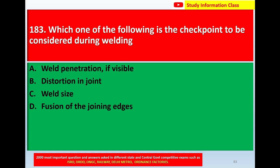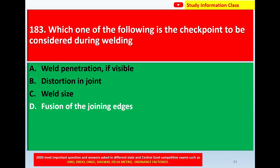Next, question number 183: Which one of the following is the checkpoint to be considered during welding? Option A: weld penetration if visible, option B: distortion in joint, option C: weld size, option D: fusion of the joining edges. The correct answer is option D: fusion of the joining edges.